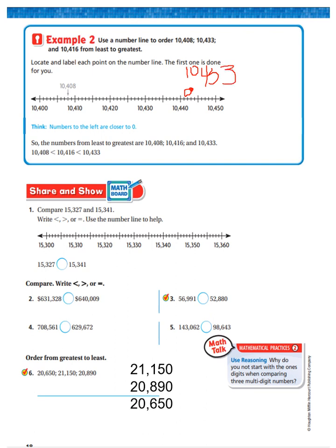Now, we need to find 10,416. Well, I see 10,410, 10,420, right in the middle would be 10,415. So right next to 10,415 would be 10,416. So I will write that on there. 10,416. Boys and girls, make sure you fill in your number line.